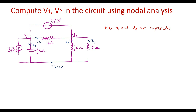So, first we are supposed to analyze the super node. Here we can see that the plus terminal is connected to V1 and the minus terminal is connected to V2. So I can write V1 minus V2 is equal to 10∠45°. That is the potential difference between V1 and V2 is 10∠45°. We call this Equation 1.